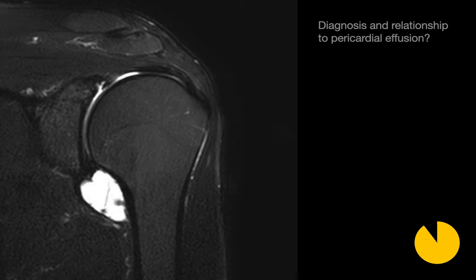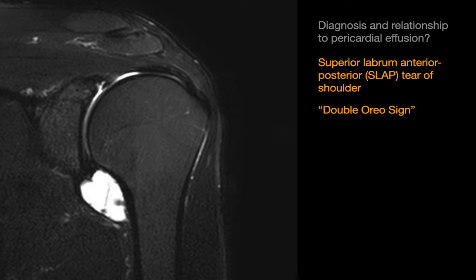What's the diagnosis in relation to this finding compared to a pericardial effusion? In the chest we have the Oreo sign. On shoulder MRIs we have the double Oreo sign. The double Oreo sign corresponds to a SLAP tear of the shoulder. The two hyperintense lines in this double Oreo sign correspond to the superior labral tear and a physiologic cerebral recess.